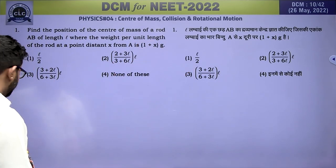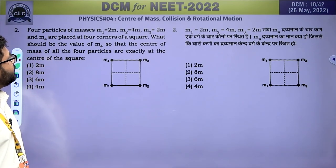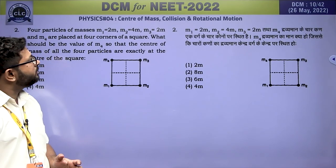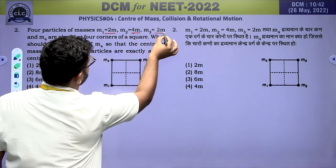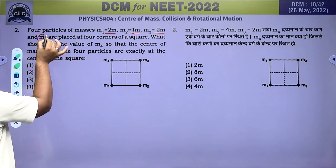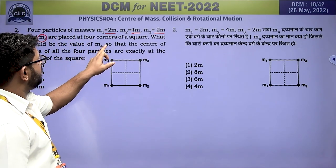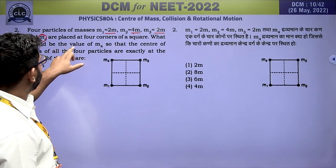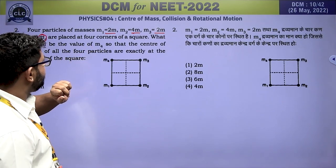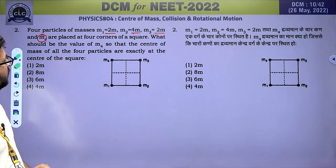Next question: four particles of masses M1 = 2M, M2 = 4M, M3 = 2M, and M4 are placed at four corners of a square. What should be the value of M4 so that the centre of mass of all four particles is exactly at the centre of the square?